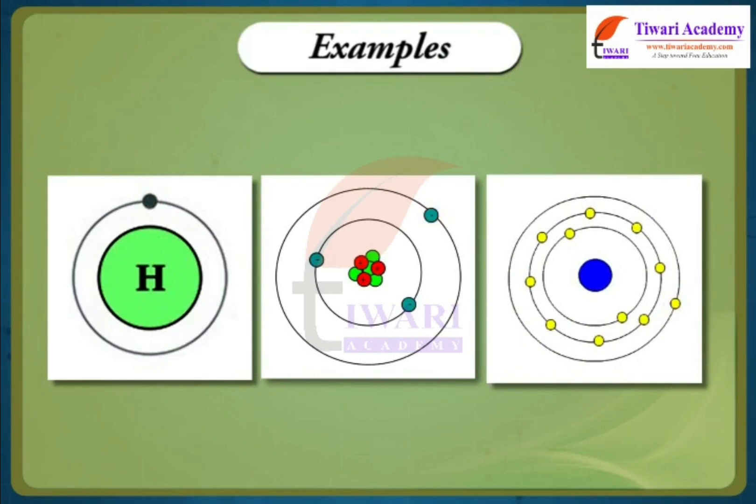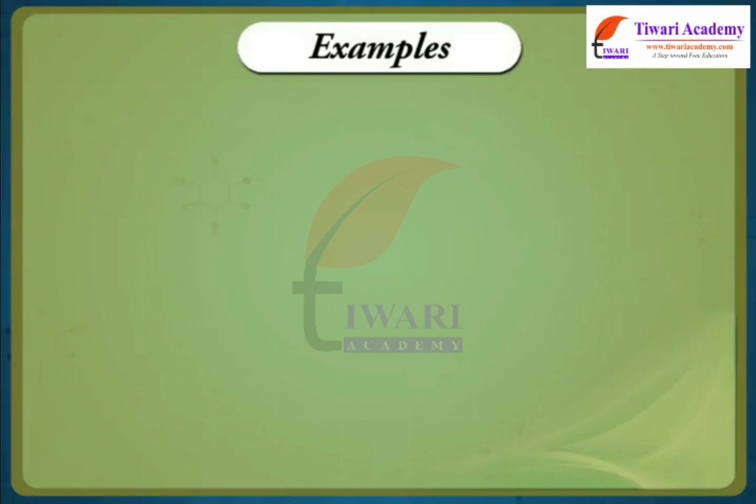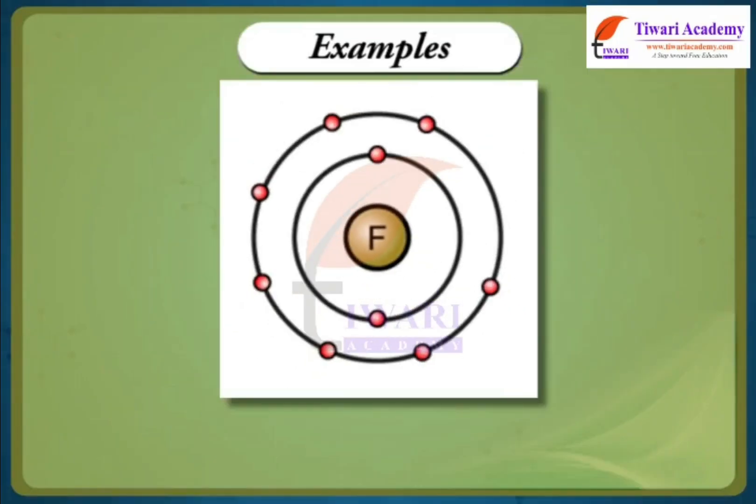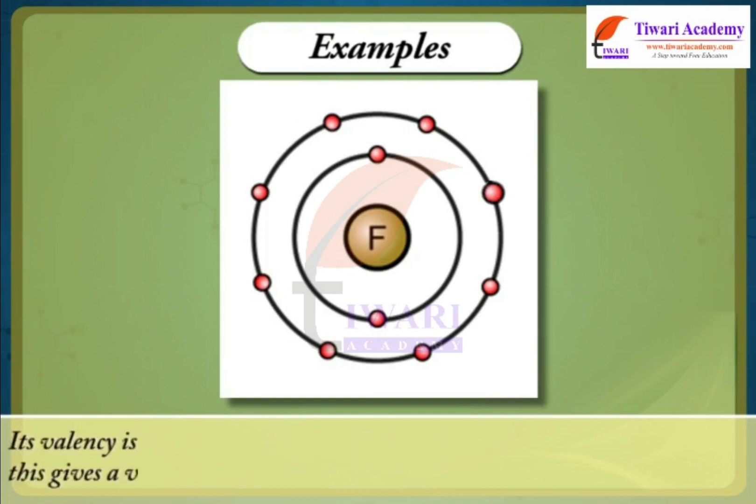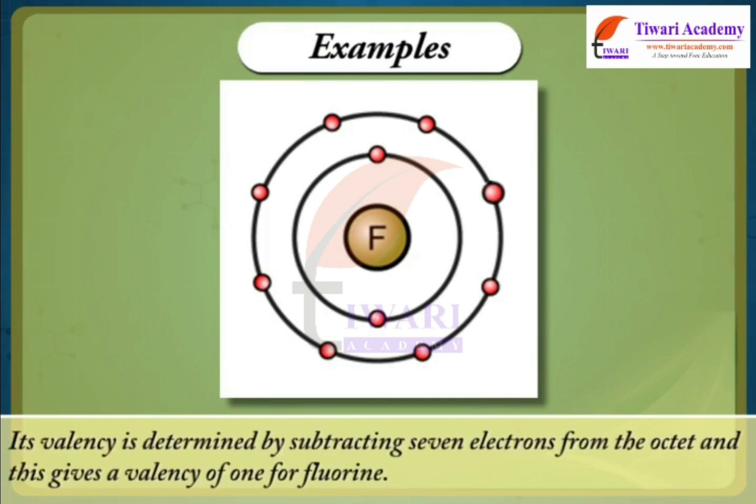If the number of electrons in the outermost shell of an atom is close to its full capacity, then valency is determined in a different way. For example, the fluorine atom has seven electrons in the outermost shell and its valency could be seven. But it is easier for fluorine to gain one electron instead of losing seven electrons. Hence, its valency is determined by subtracting seven electrons from the octet and this gives a valency of one for fluorine.